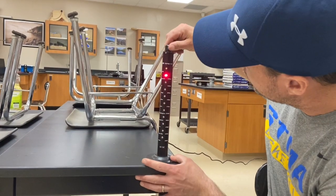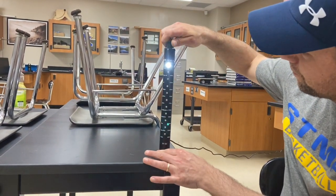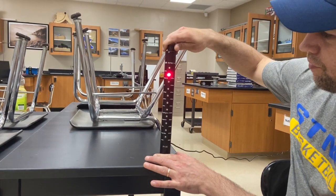So here I have white light, which has all the frequencies of light kind of mixed together, and then red is 640 nanometers.